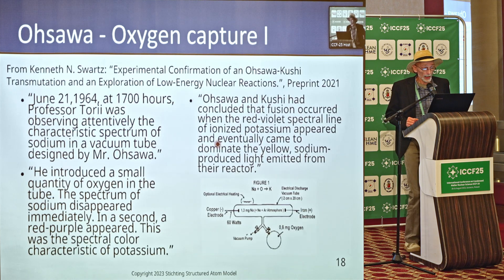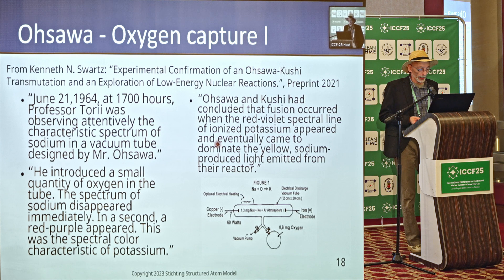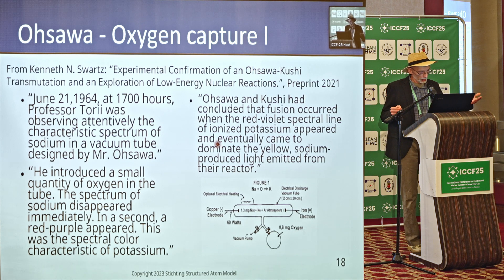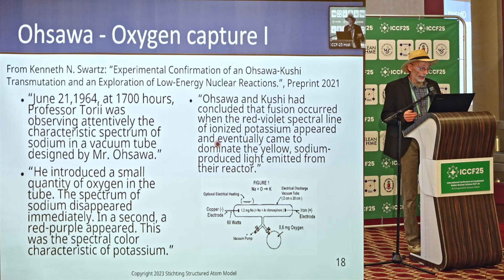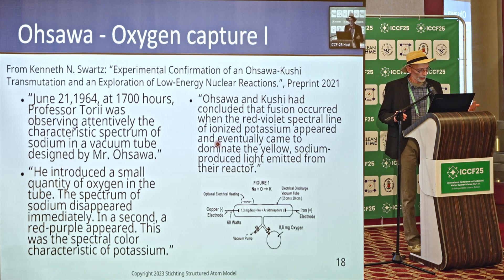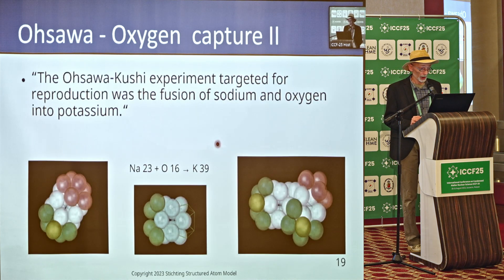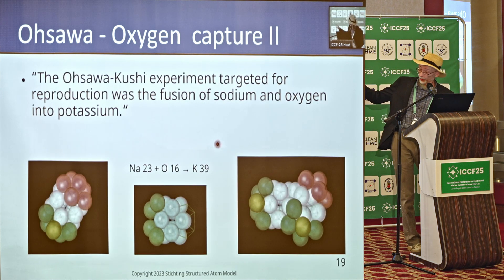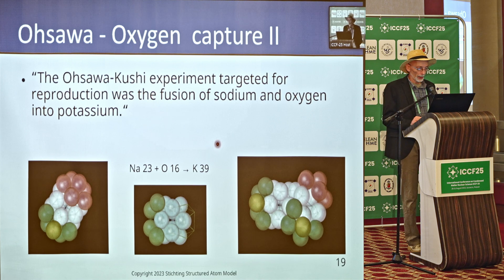Then Osawa — in 1964 already — they had an experiment with a closed chamber. They ionized a little bit of sodium in it, then added the molar equivalent of oxygen. The descriptions show that the sodium's yellowish-orange color turned into the red-purple of potassium, pretty much instantly. Using the Structured Atom Model, we see the reaction: sodium plus oxygen turning into potassium.